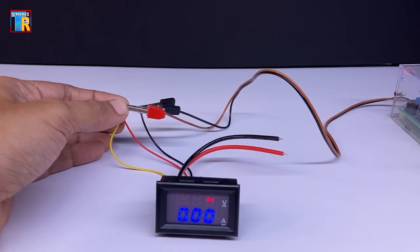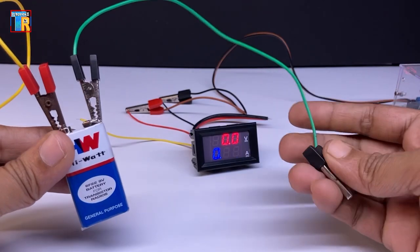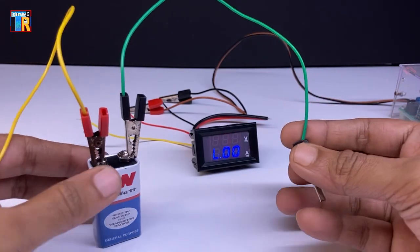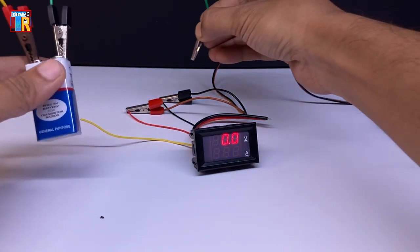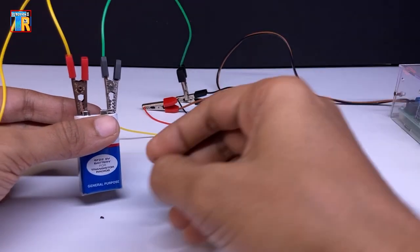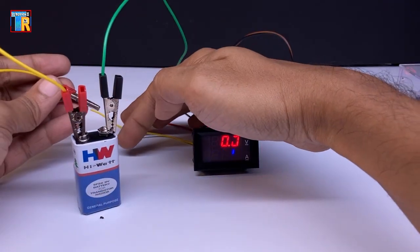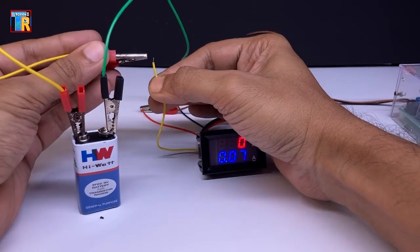You can use any other voltage source to measure voltage. I am using a 9V battery. Connect the negative terminal of the battery to the negative wire and the positive terminal to yellow wire. The meter will display the battery voltage.